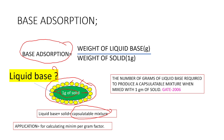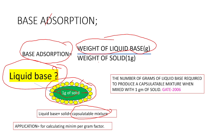So base adsorption is simply how much gram of liquid base is required to produce a capsulatable mixture with 1 gram of solid. The formula for that is: weight of liquid base in grams divided by weight of solid, where the weight of solid is fixed at 1 gram.